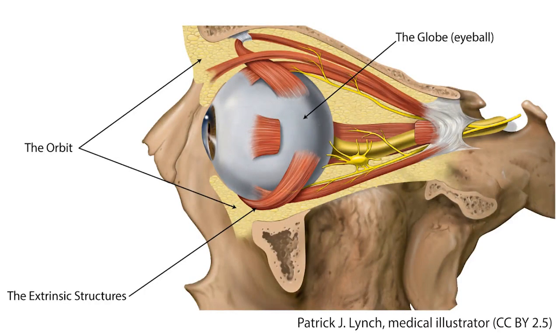The eye consists of three main parts: the orbit, the globe (eyeball), and the extrinsic structures.